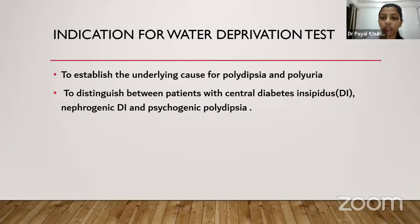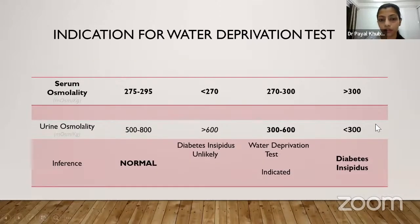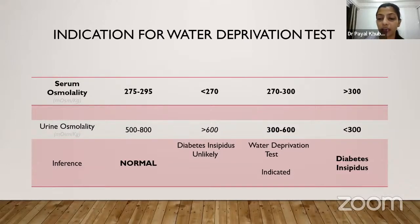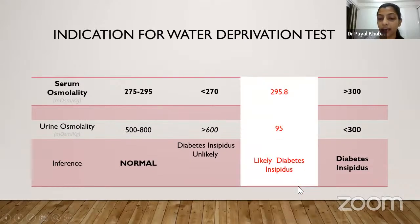Indications for water deprivation test: to establish the underlying cause of polydipsia and polyuria, and to distinguish between central DI, nephrogenic DI, and psychogenic polydipsia. Normal values: serum osmolarity less than 270 with urine osmolarity greater than 600 makes DI unlikely. Serum osmolarity greater than 300 with urine osmolarity less than 300 confirms DI. Serum osmolarity 270-300 or urine osmolarity 300-600 is an indication for water deprivation test, as in our case with serum osmolarity 295.8.